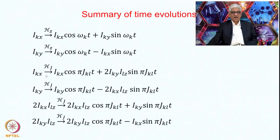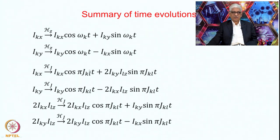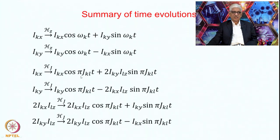IKx again under the influence of the coupling Hamiltonian for a time t gives IKx cosine(π·JKL·t) plus 2·IKy·ILZ sin(π·JKL·t), where JKL is the coupling constant. If it were a coupling of K to M, then it would have coupling constant JKM and IKZ accordingly. If you have multiple couplings, you evolve step-wise: first under one coupling, then under the second, applying the same equations each time.